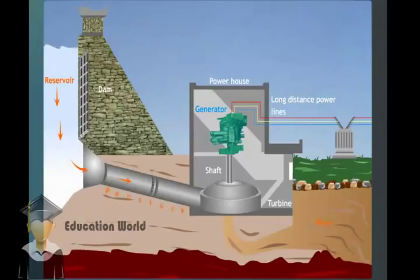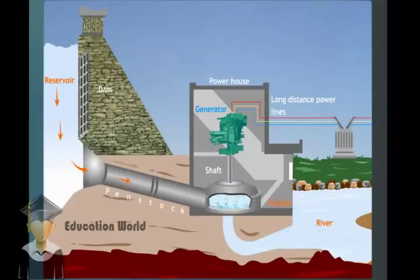Water flows through the penstock and rotates the turbine. The flowing water rotates the turbine, which is placed at the end of the penstock.